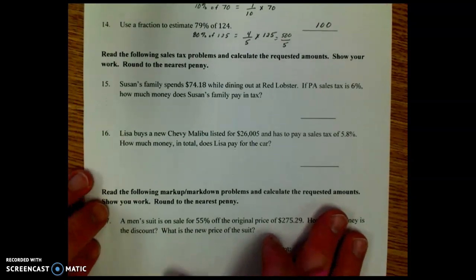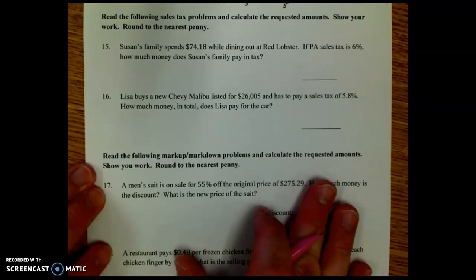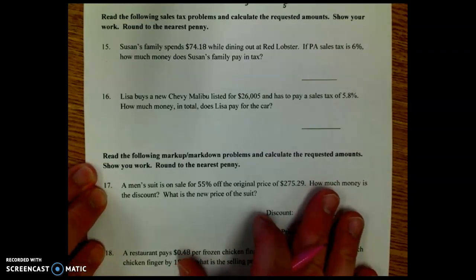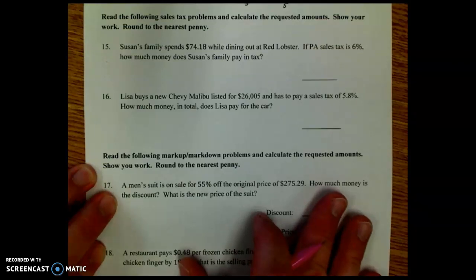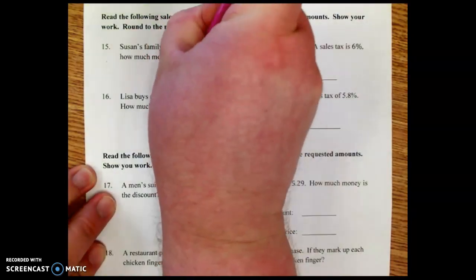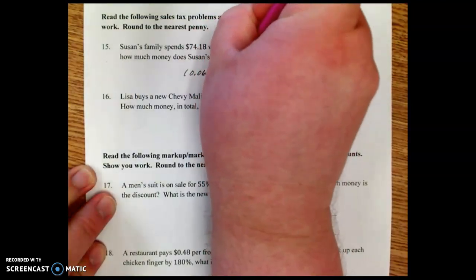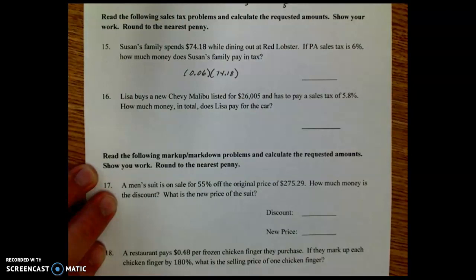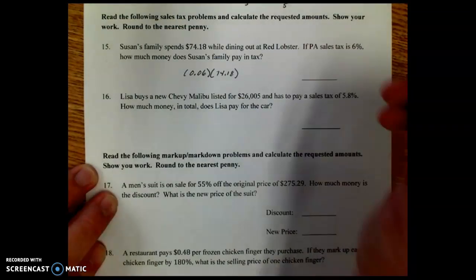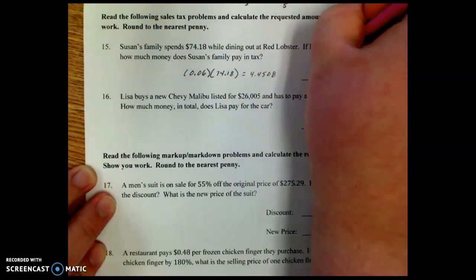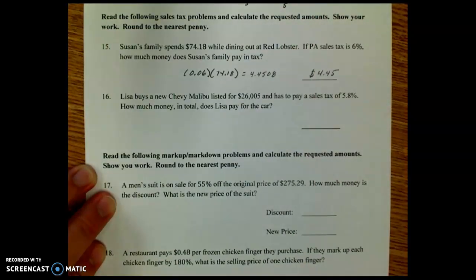Moving along, it says, read the following sales tax problems and calculate the requested amounts. Show your work, round to the nearest penny. Number 15, Susan's family spent $74.18 while dining out at Red Lobster. If PA's sales tax is 6%, how much money does Susan's family pay in tax? So we're going to take the percent, convert it to a decimal, that's 0.06, and we're going to multiply it by the spending amount, $74.18. And when we do that, we get 4.4508, and that's going to round to $4.45 in tax.